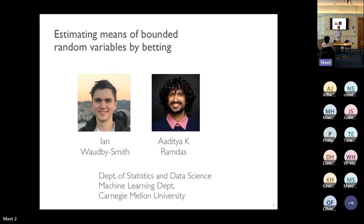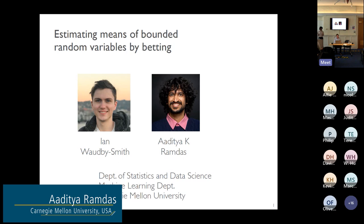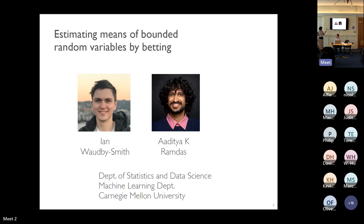The paper will be presented by Aditya Ramdas and will be published in the Journal of the Royal Statistical Society Series B during 2023. His co-author Ian will be available for comments later. Aditya thanks Robin for the introduction, expressing pleasure at being in London and at the Royal Statistical Society, which was founded in 1834.